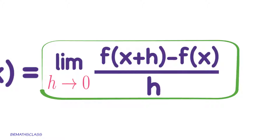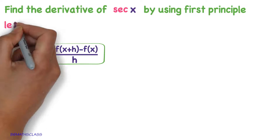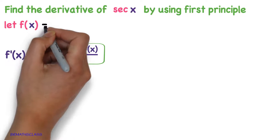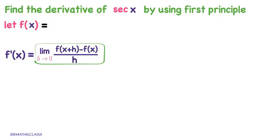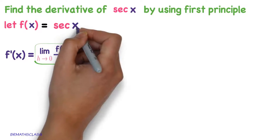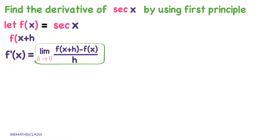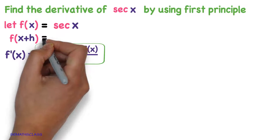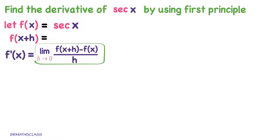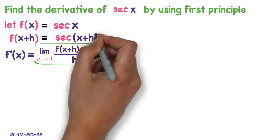Whichever function derivative you want to find, take that function as f of x. So f of x is secant x. As we need f of x plus h, we just replace x with x plus h. So f of x plus h is secant of x plus h.